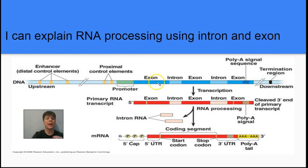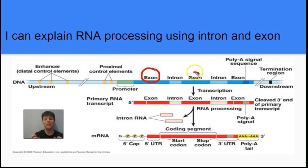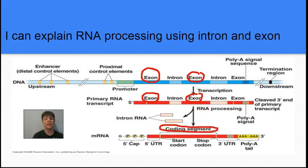Our next learning target is to explain RNA processing using the terms intron and exon. Originally we have a DNA molecule, which is going to be transcribed to produce RNA. In the DNA gene — the transcribed portion — there are regions called exons and regions called introns. An exon (I like to call it the exciting part of the DNA) is going to lead to messenger RNA that is actually used in the coding segment, giving information that puts amino acids into a protein. The intron sequences are going to be spliced out of the primary RNA transcript by something called a spliceosome.